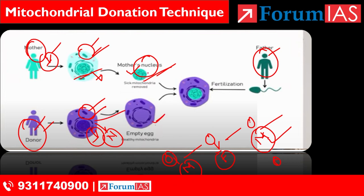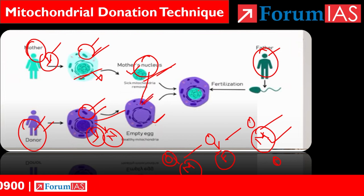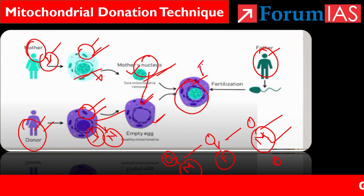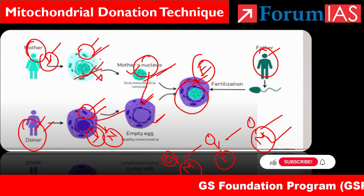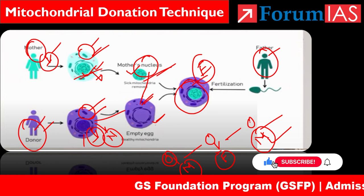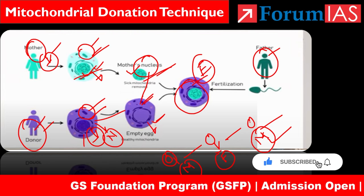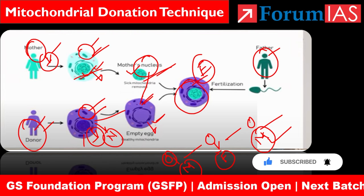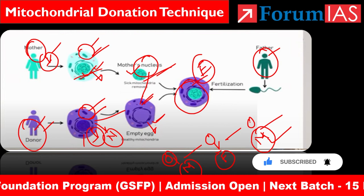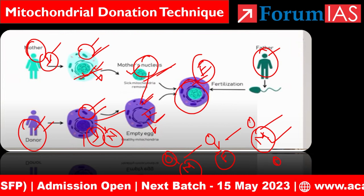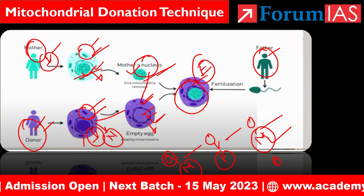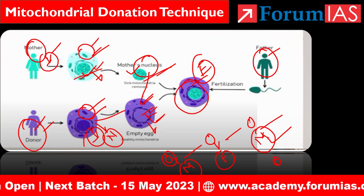The own mother's nucleus is placed into the donor mother's empty egg — the egg from which the nucleus has been removed. This creates a healthy egg that has the own mother's nuclear DNA but the donor mother's healthy mitochondria, replacing the defected mitochondria.